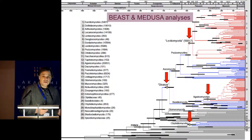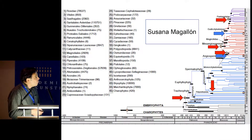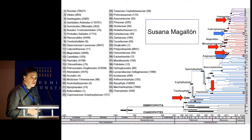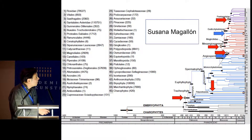These fungi have not evolved in a vacuum. We know that they are interacting with plants. So in collaboration with Susanna Magallon, we have also estimated the divergence time for land plants or embryophytes. We found five major accelerations of diversification and two decelerations. The most important diversification or radiation that took place corresponds to the origin of the tracheophytes or vascular plants.